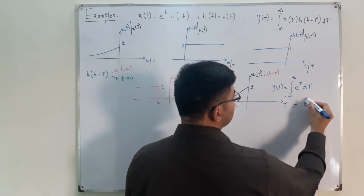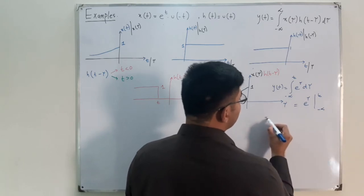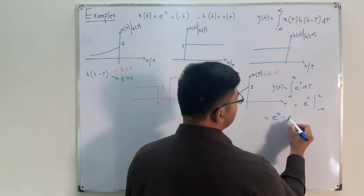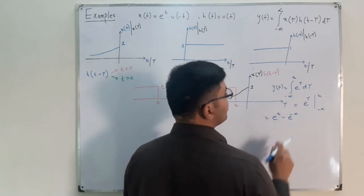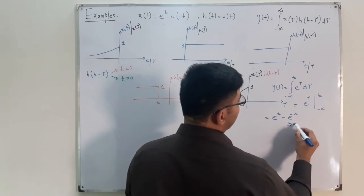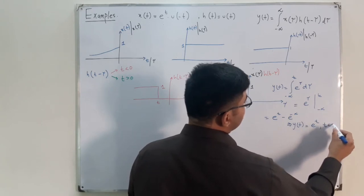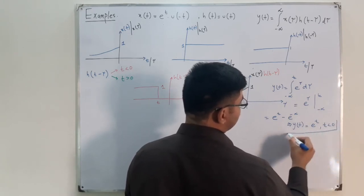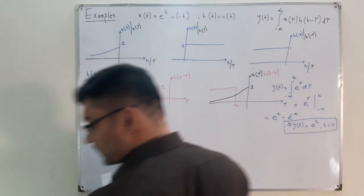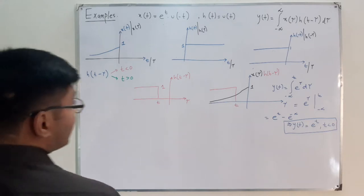So the result is y(t) = e^t for t < 0. Let me verify — yes, this is correct.